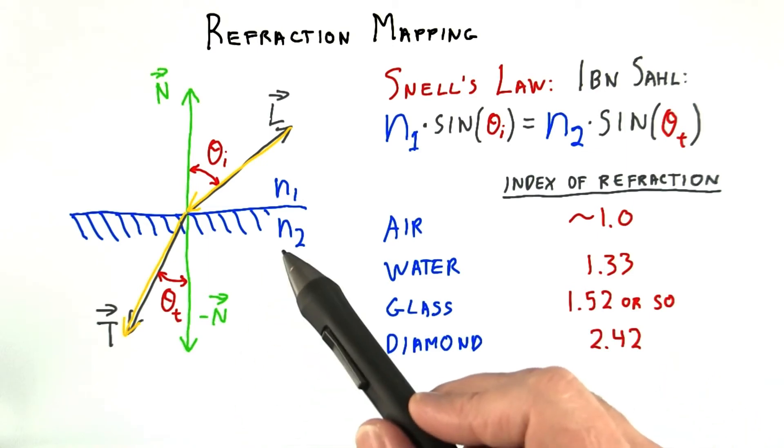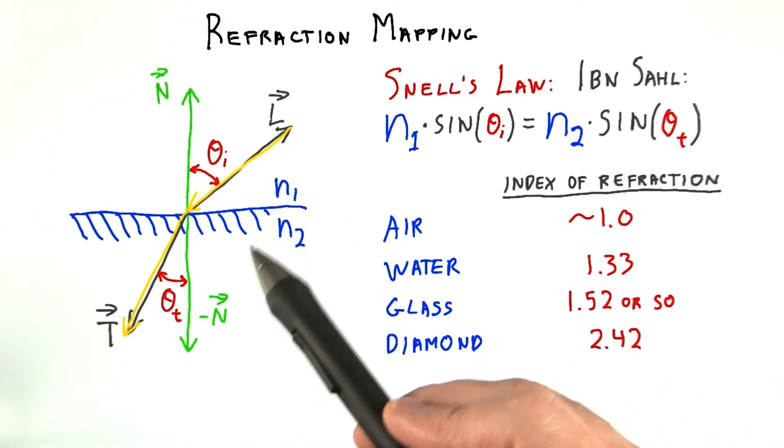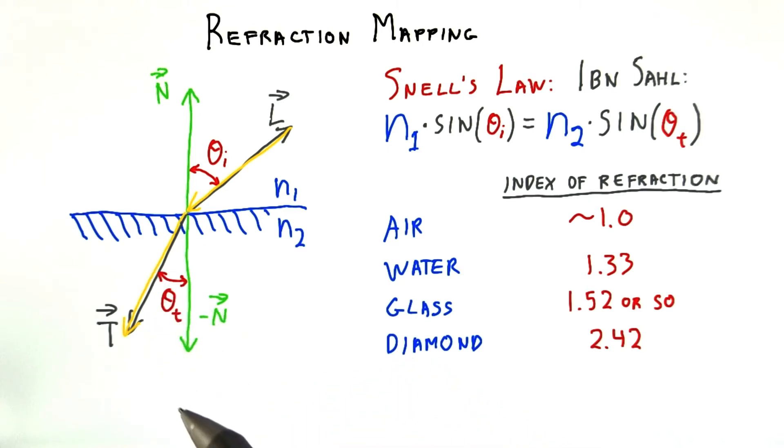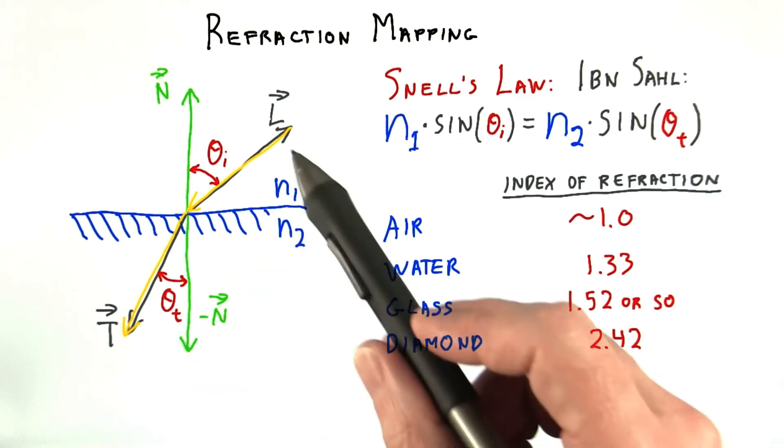When the index of refraction of the second material is greater than the first, the effect is that the sine of the angle must be smaller to compensate. This means the angle from the normal becomes smaller. In other words, light bends towards the normal when going from air to glass.